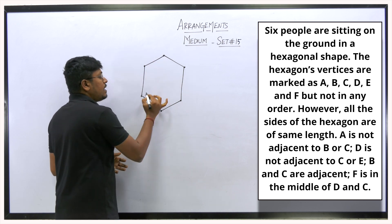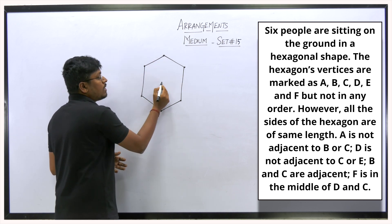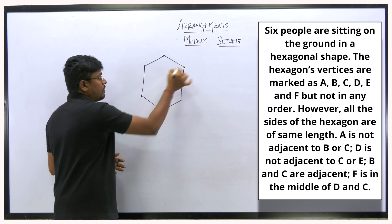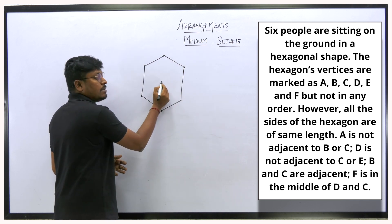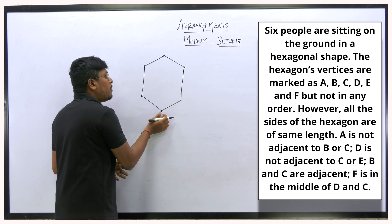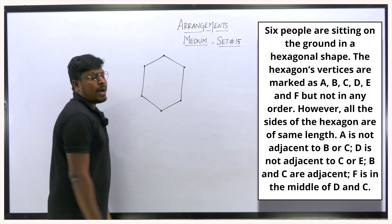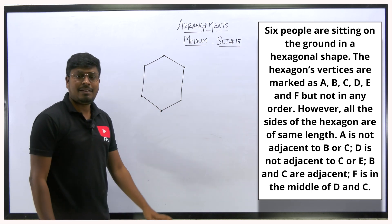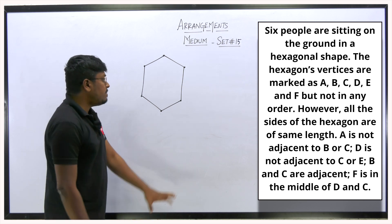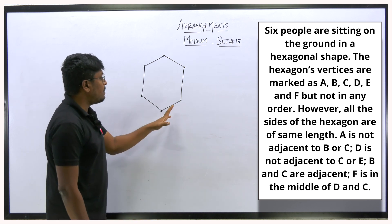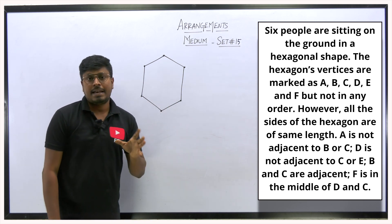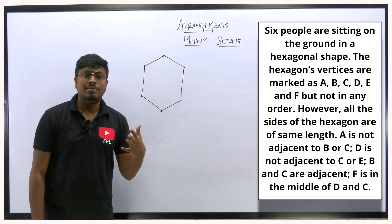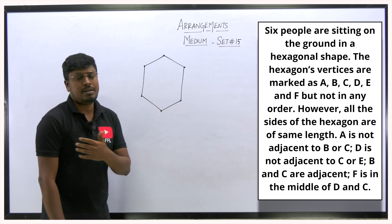If all six persons are facing the center, you have to draw the diagram accordingly — the center point is where diagonal lines intersect. Based on the question, you solve accordingly. These hexagonal shape questions are very rare and appear mostly in IT company campus interviews.